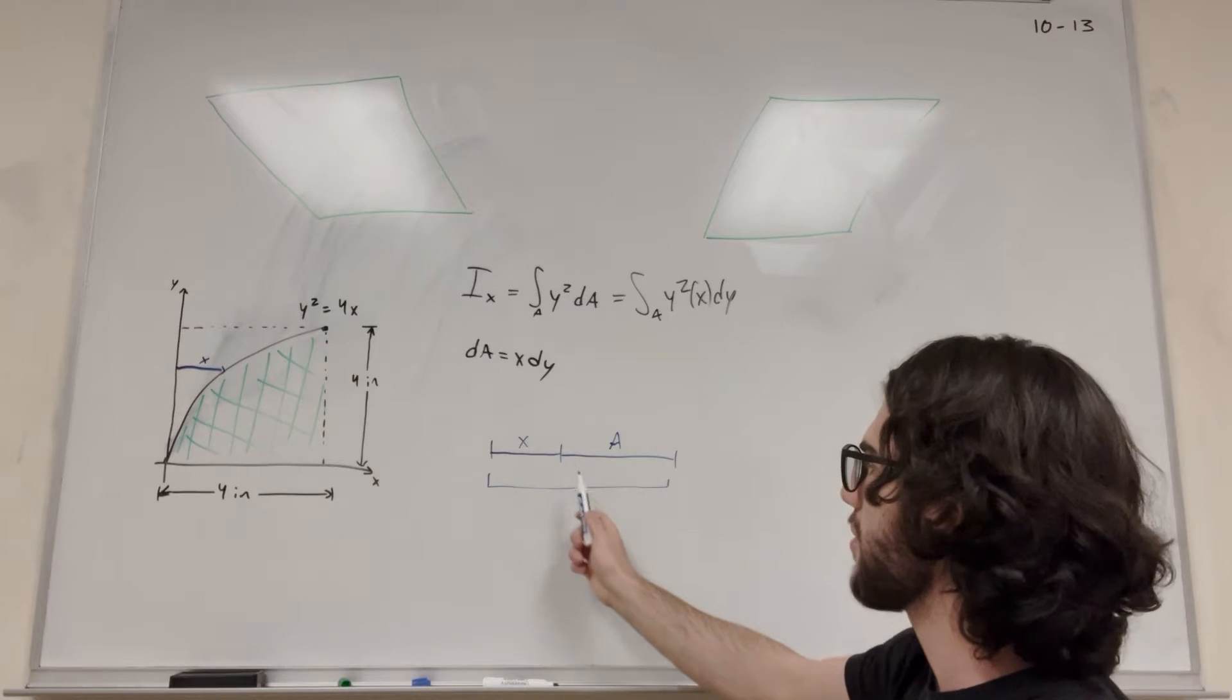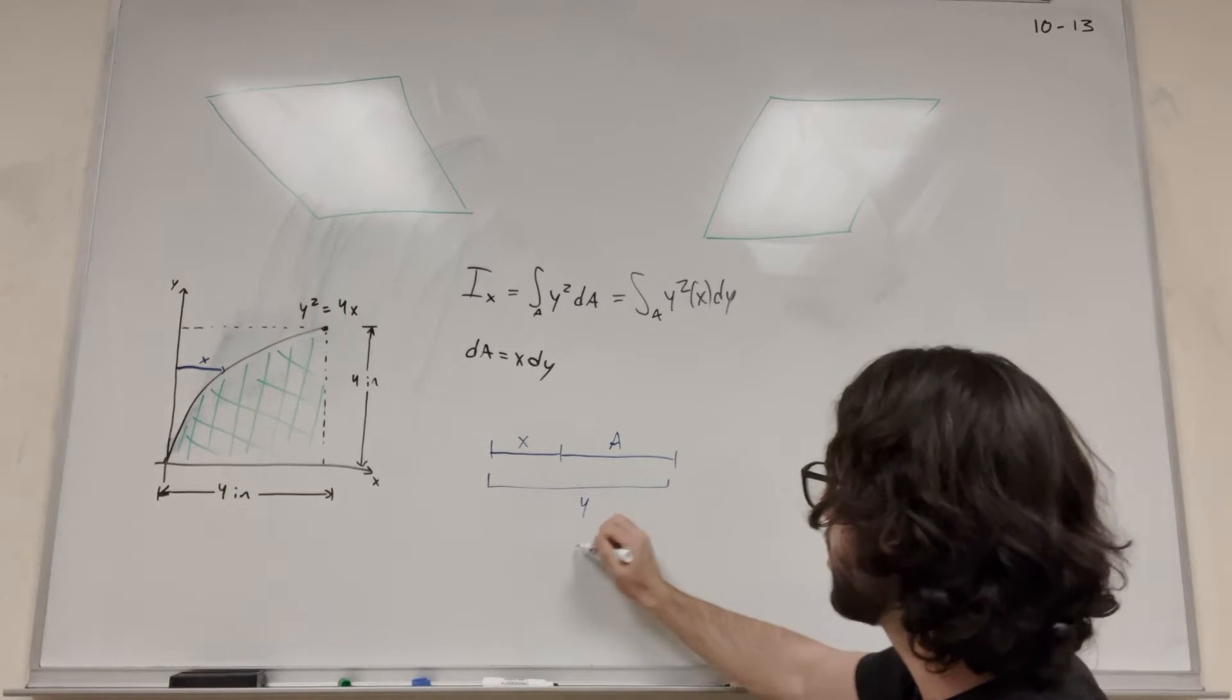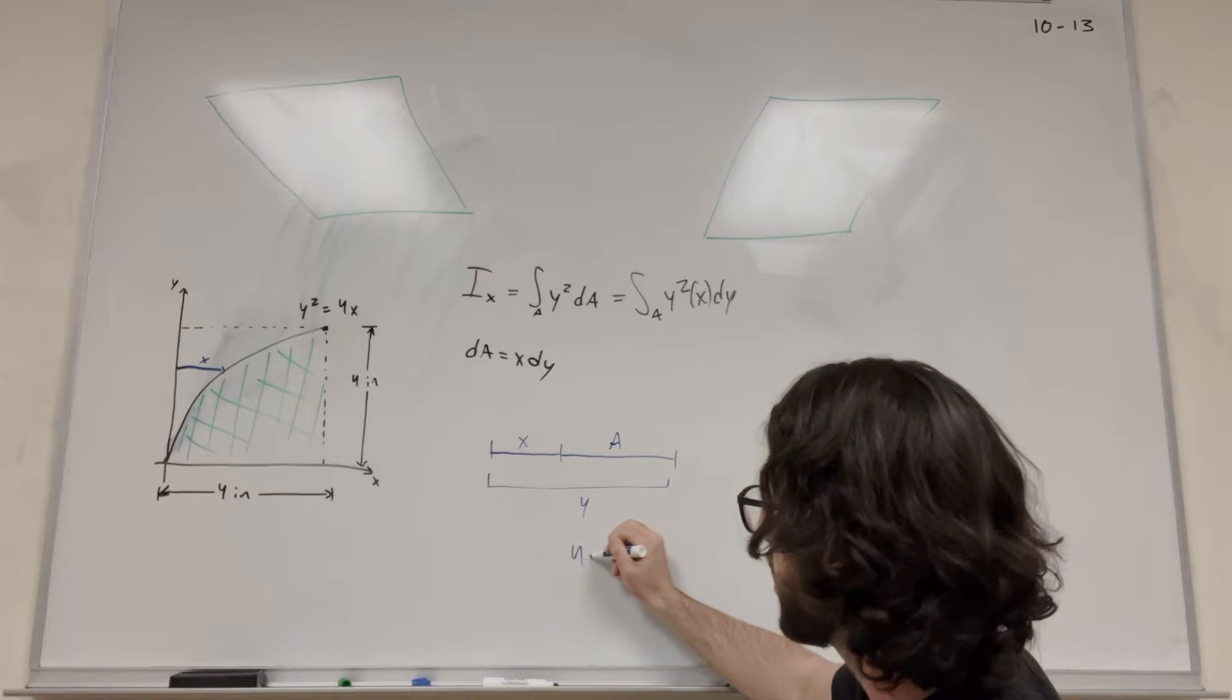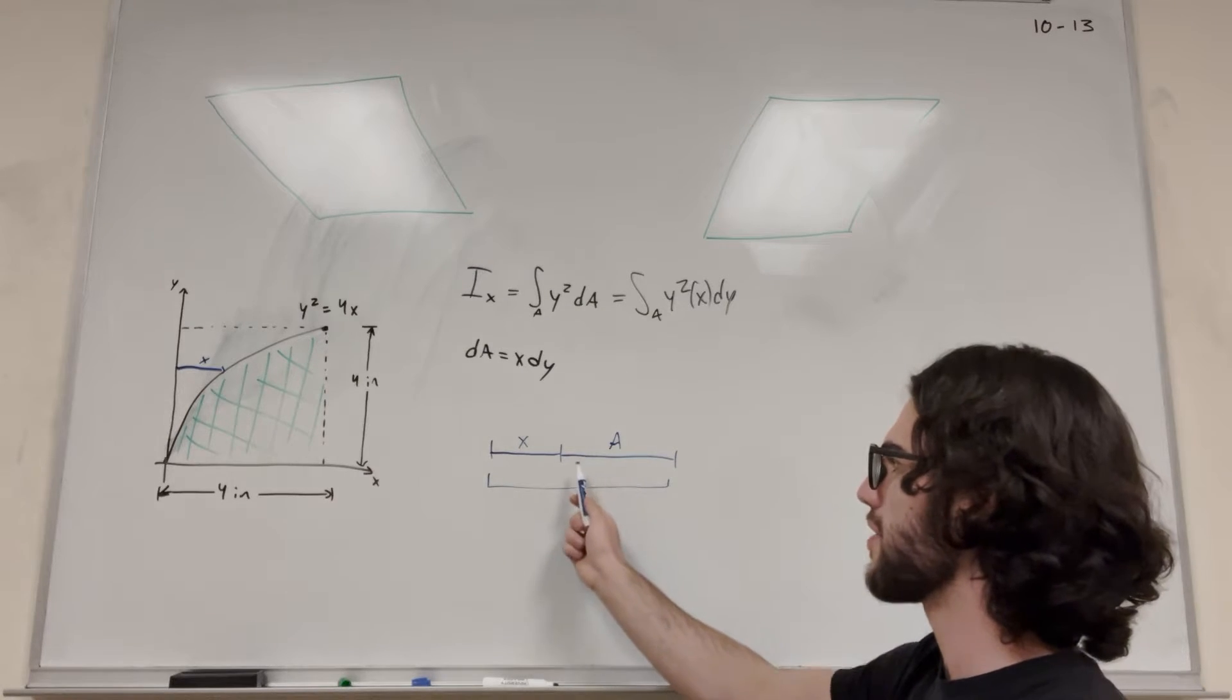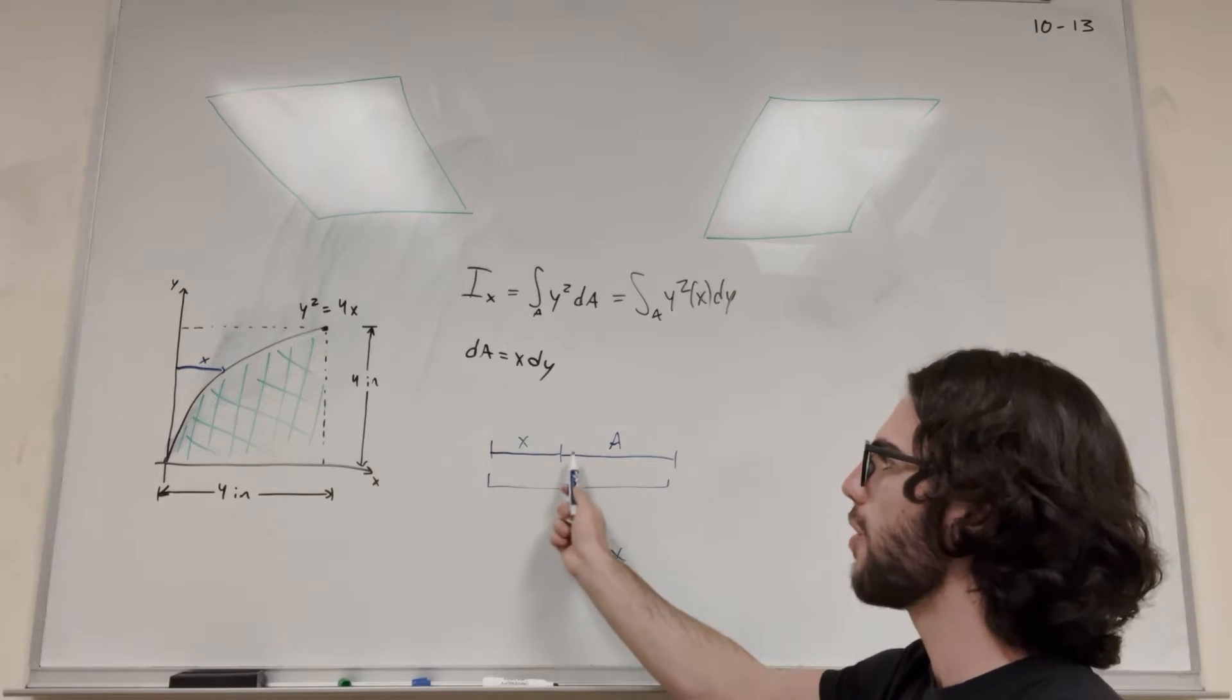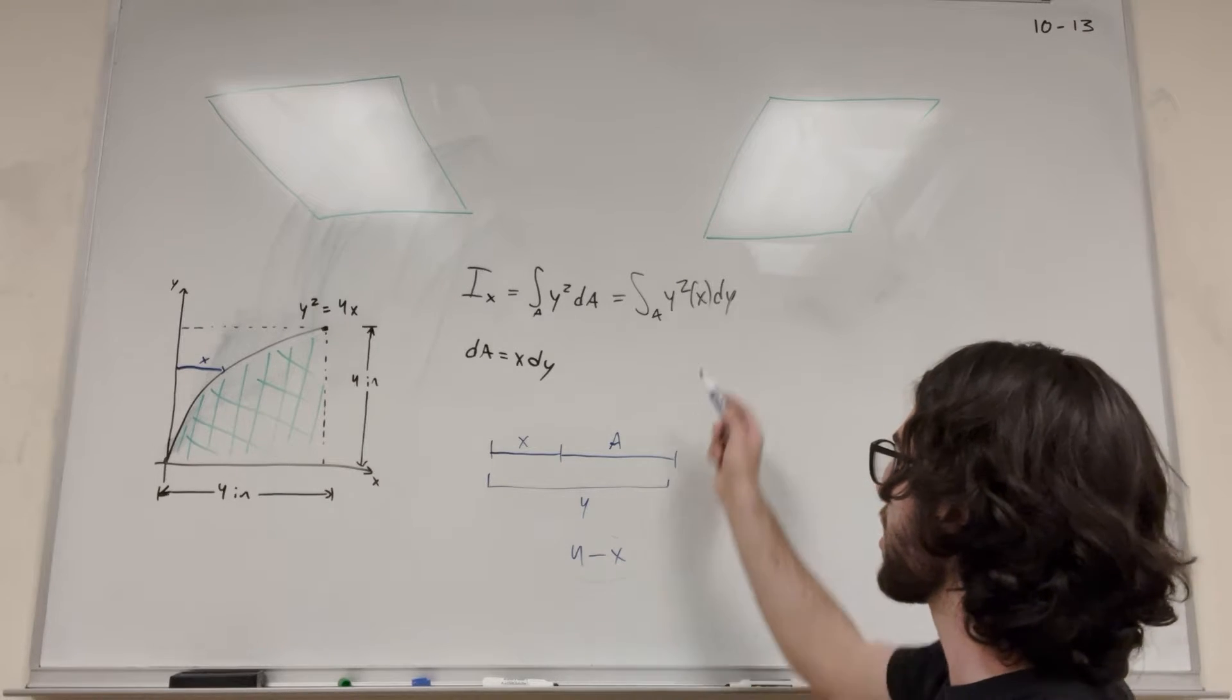We know that if we're going to get what this area is, we're going to have to take the total distance, which is 4, and then subtract x off of it. Because if we're trying to get this area, we have to take the entire distance and subtract off what we don't want. So 4 minus x. This is actually what we're going to put in for our integral.